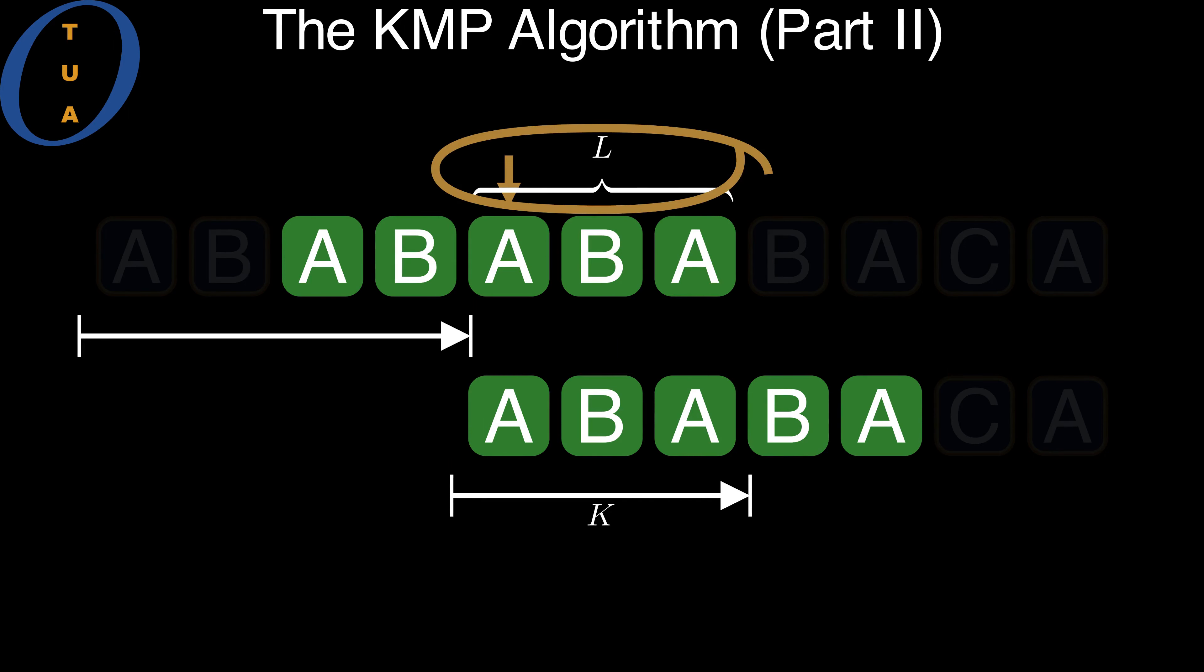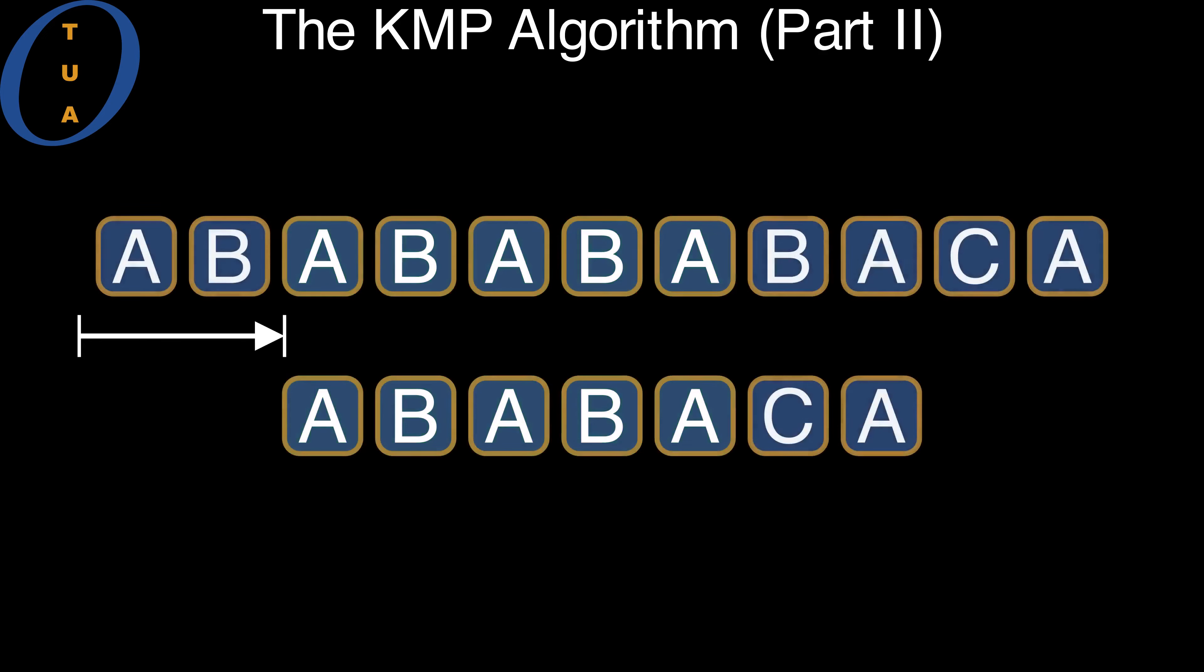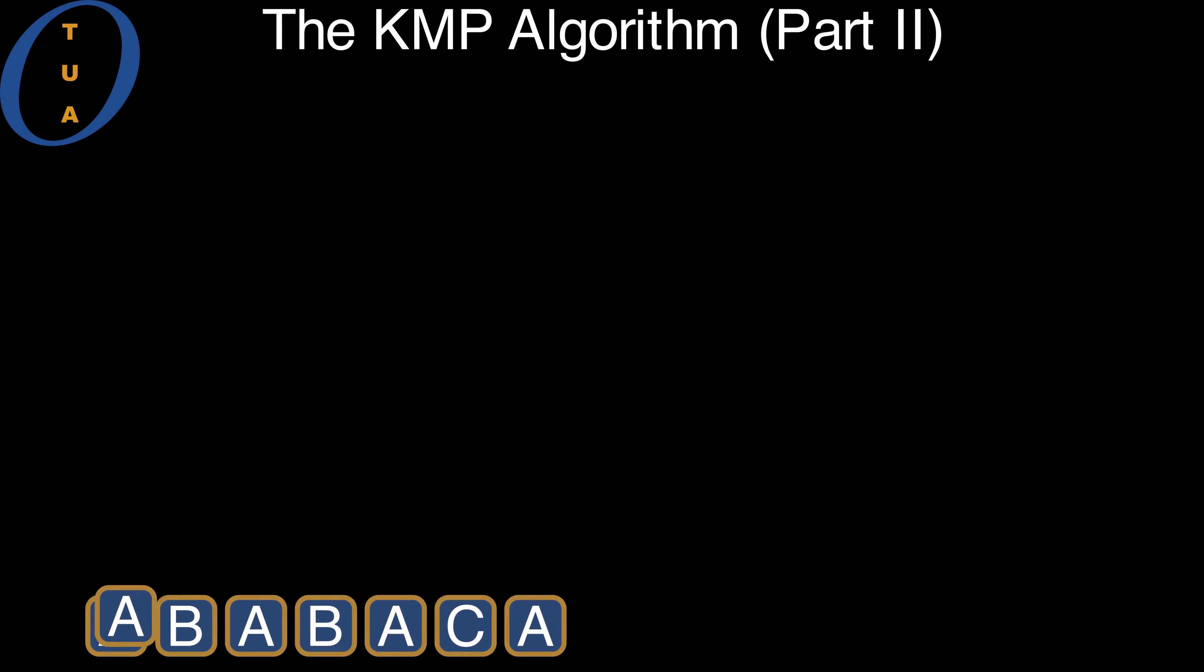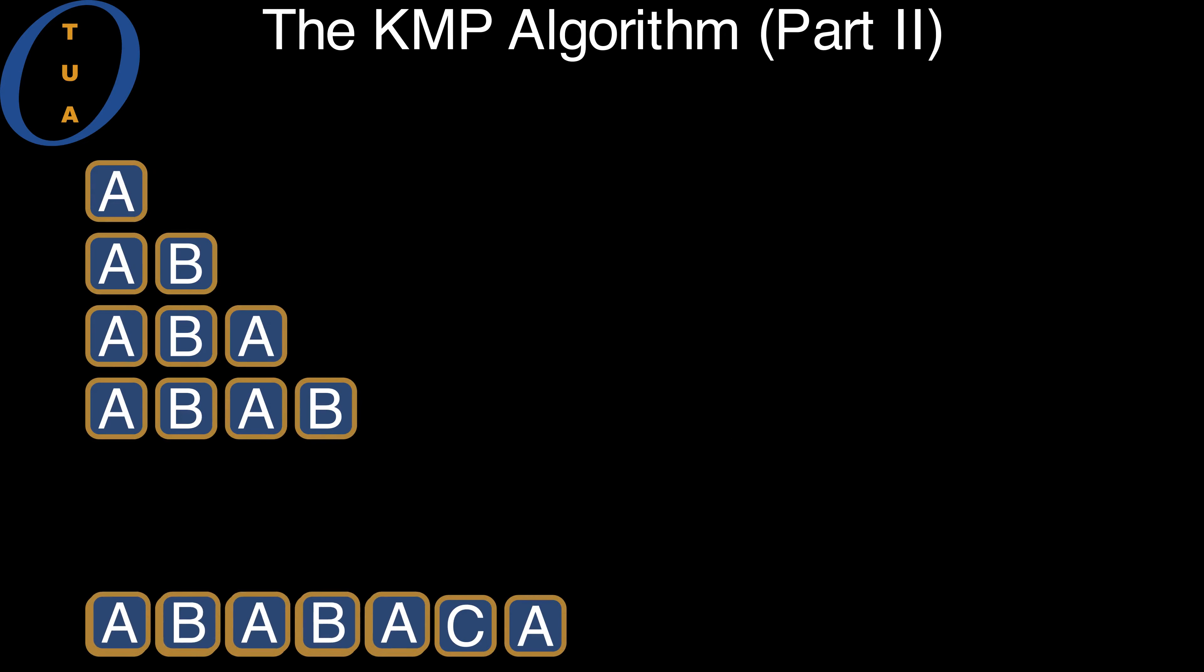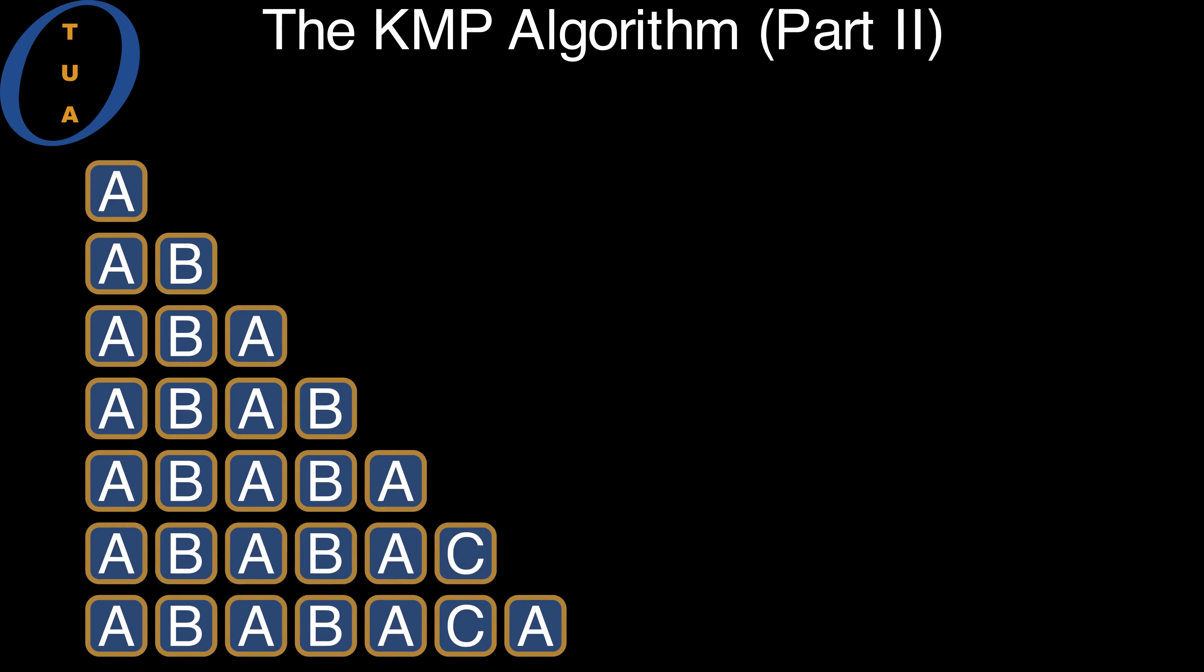It remains to compute L, the length of the longest proper border. To do this, we first notice that at all times, the overlap is a prefix of the pattern. Therefore, there are only as many possible overlaps as there are prefixes of the pattern.